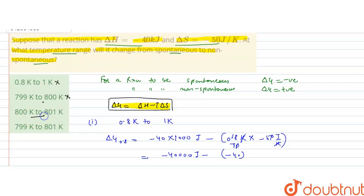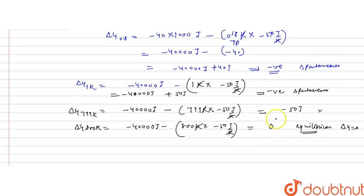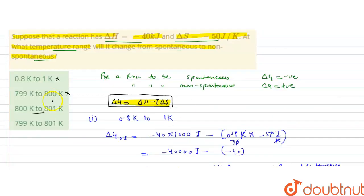The third option is from 800 to 801 kelvin. We have already seen that at 800 kelvin ΔG = 0, which is equilibrium and not a spontaneous-to-non-spontaneous transition. So this option is also not correct. Obviously, the last option should be correct since the first three are all incorrect.